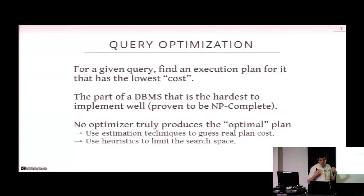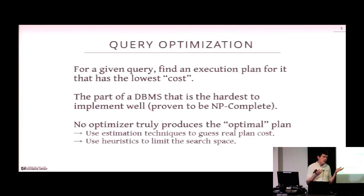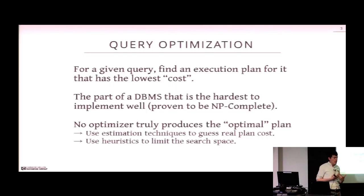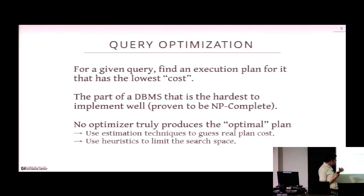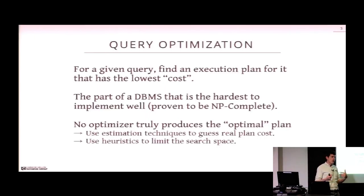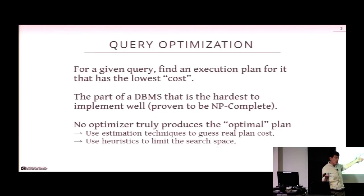When the application submits a query, you need to do the planning right then and there. If your query is only going to run for one second but your planning takes five seconds, that's not a good trade-off. We're not always going to find the optimal plan — we want to find one that's good enough. To avoid exhaustive search, which would be exponential, we'll use estimation techniques to guess the real cost, looking at cardinality and selectivities of our queries and database.